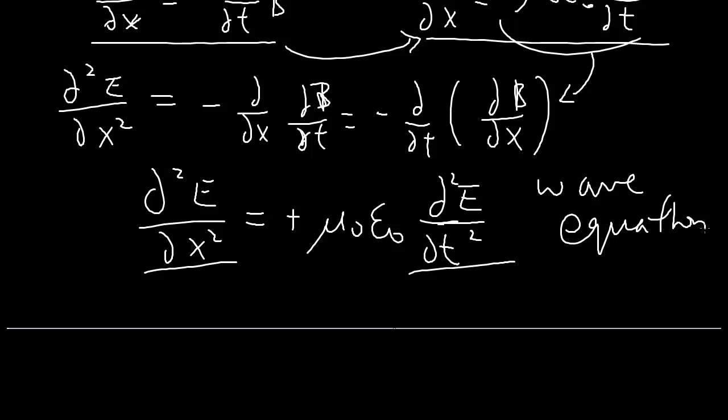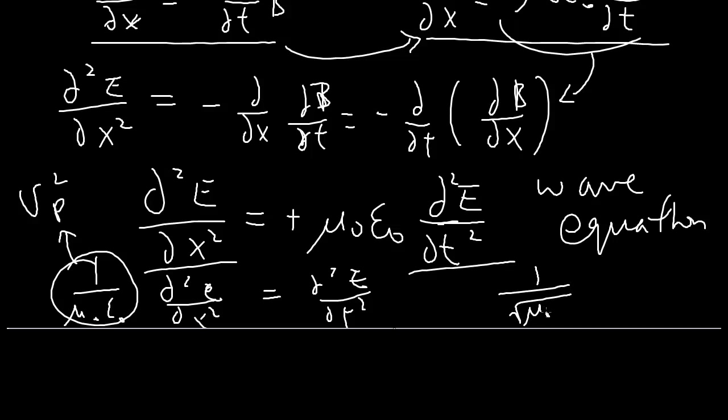To rearrange this to the form that we like more, we have 1/(μ₀ε₀) times ∂²E/∂t², and this is going to be your phase velocity squared. Maxwell actually worked out the number, as you can as well, and you find that this 1/√(μ₀ε₀) is exactly the speed of light. That's why he was so confident that electromagnetic field describes light.